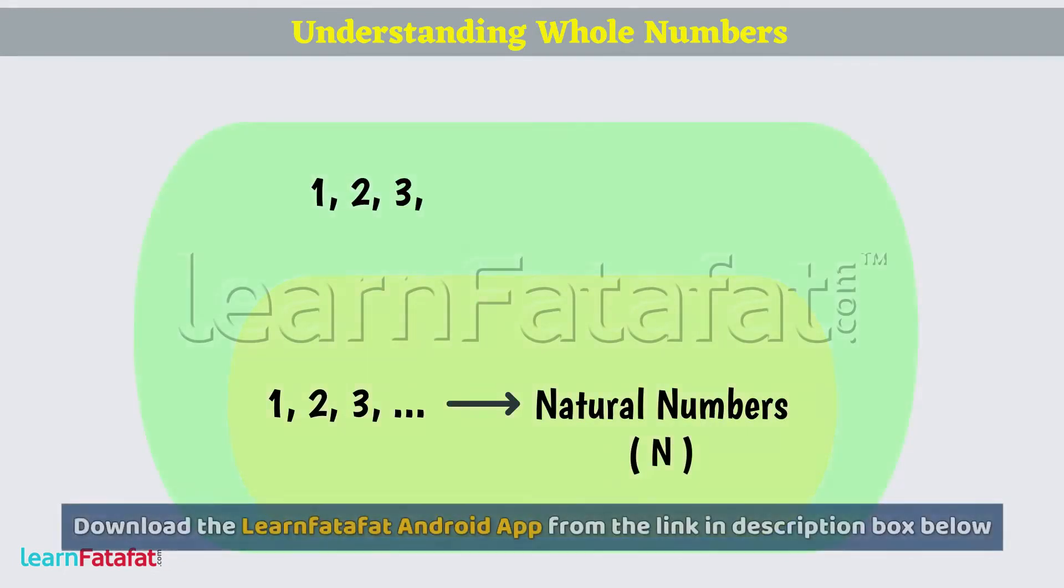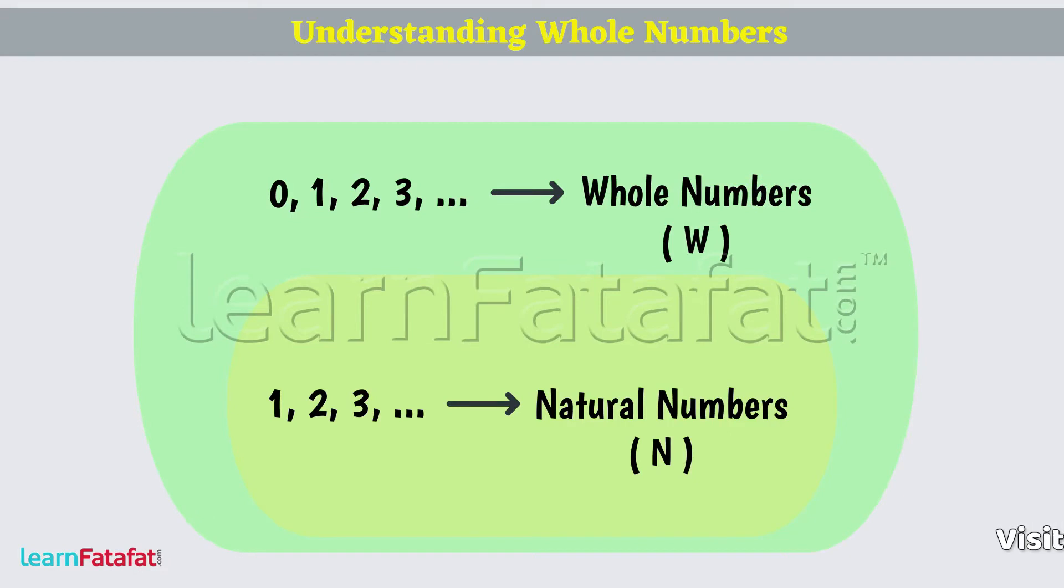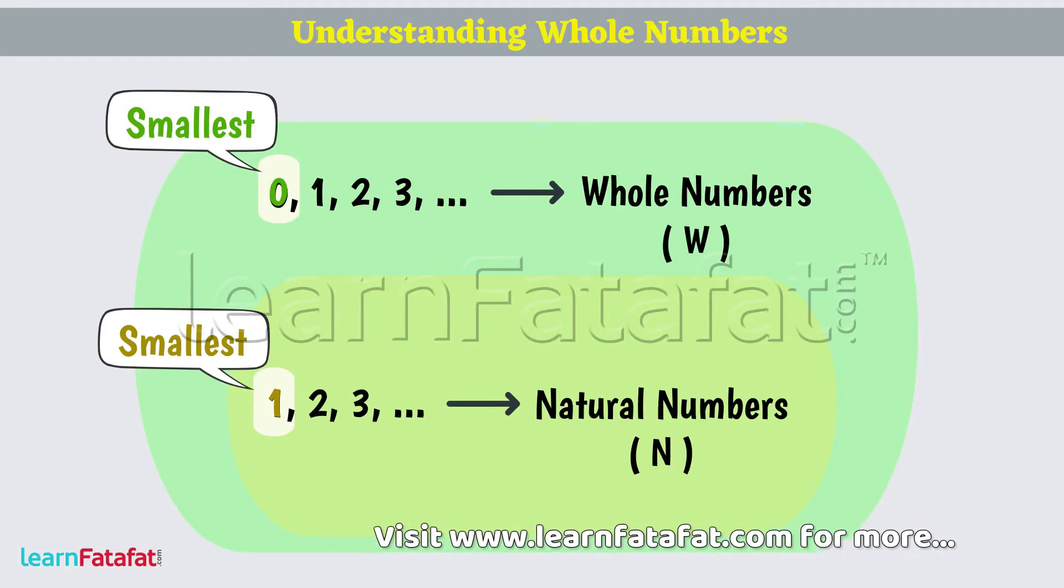All Natural Numbers along with 0 form group of whole numbers. 1 is the smallest natural number and 0 is the smallest whole number.